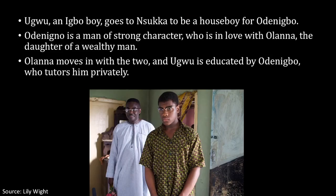When it comes to the novel itself, it begins with us meeting Ugwu, an Igbo boy who goes to Nsukka to be a houseboy for Odenigbo. Odenigbo is a man of strong character who is in love with Olanna, the daughter of a very wealthy man. Olanna moves in with the two, and Ugwu is educated by Odenigbo, who tutors him privately.